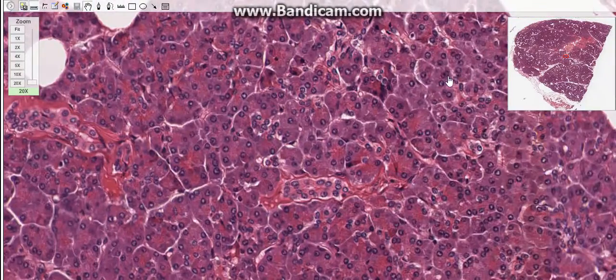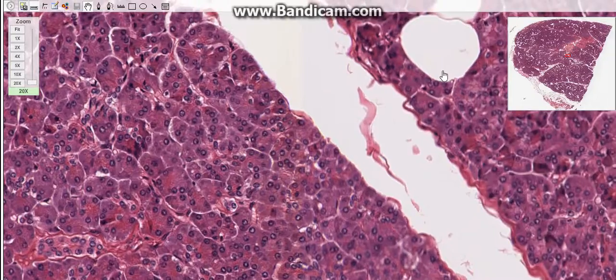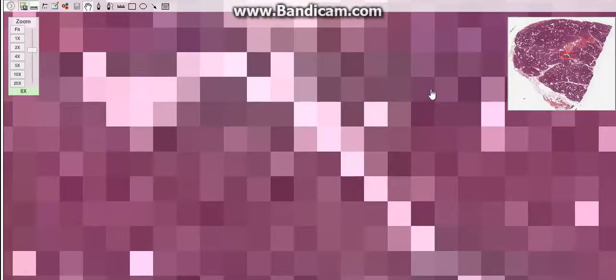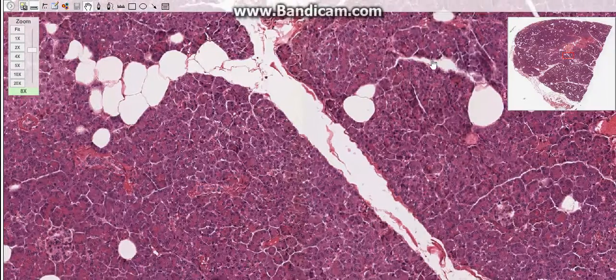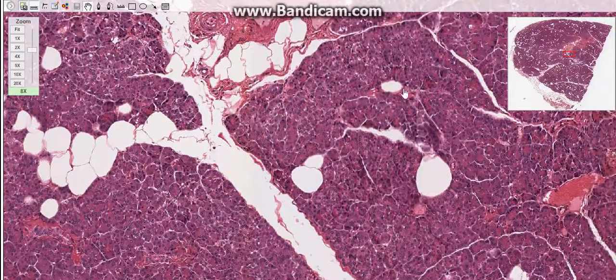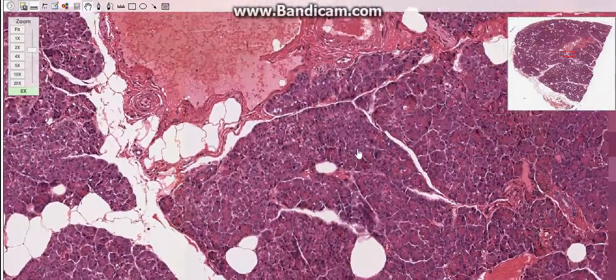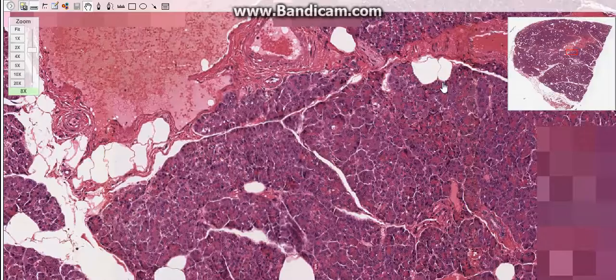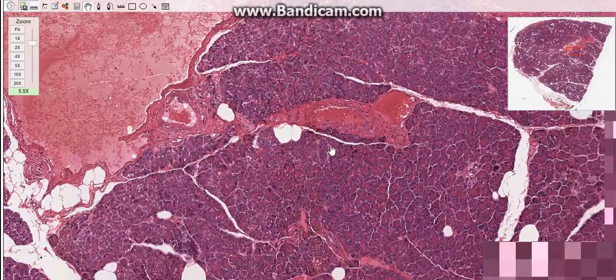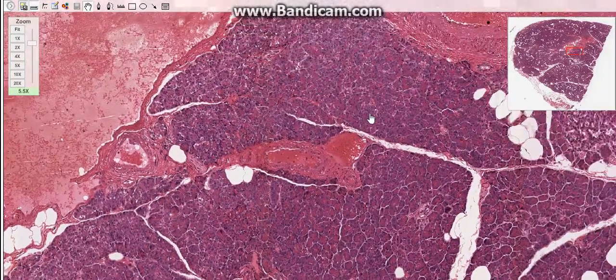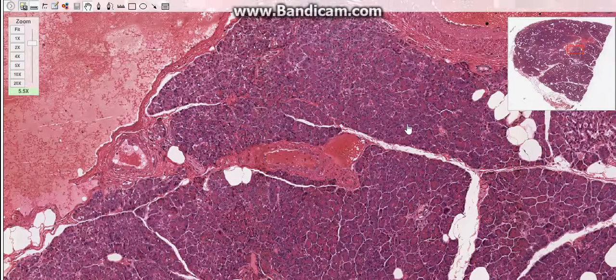Also, you need to know that D1 and delta cells, PP cells, and EC cells, these cells are present in the islets or elsewhere. They are distributed singly or in small groups between the exocrine acini and along the ducts.